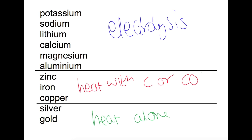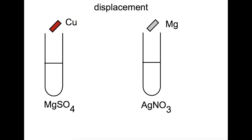Let's have a look now at reactions of metals. The first reaction we'll look at is displacement. Displacement occurs where a more reactive metal is placed into a solution of less reactive metal ions. The more reactive metal oxidizes and loses electrons to become an ion in solution. The less reactive metal that was in solution gains these electrons through a reduction process and then becomes a solid.